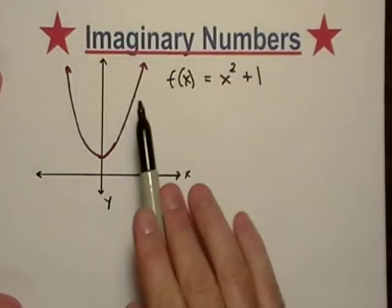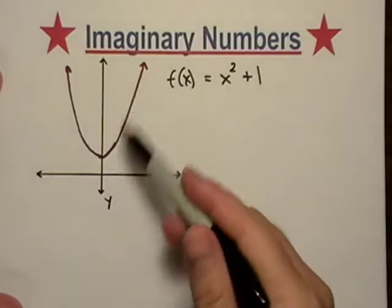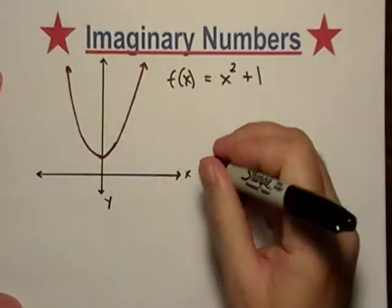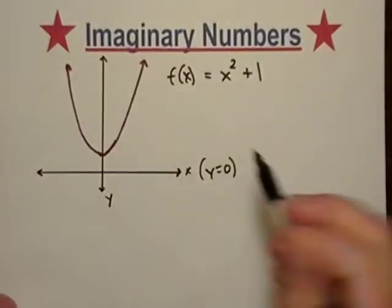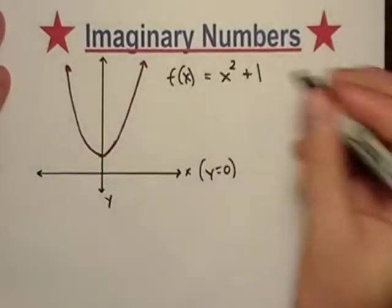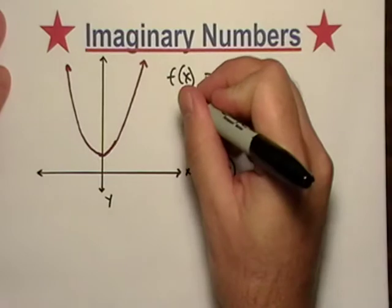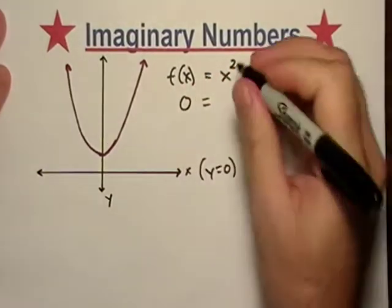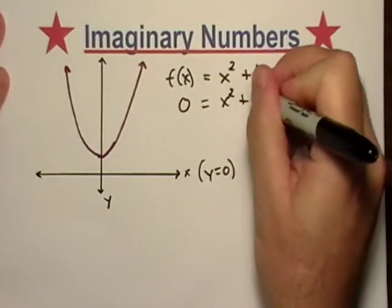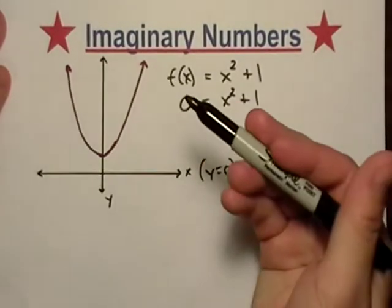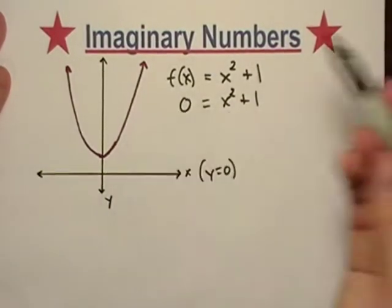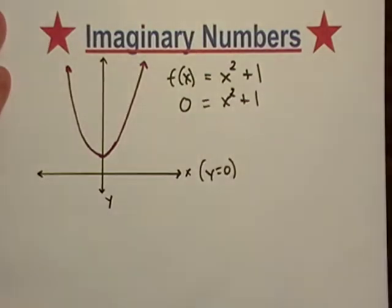You might notice that, first of all, it never crosses the x-axis and this is just y equals zero. So if I were to look for the zeros traditionally, I would set the function equal to zero. It's never equal to zero, never. Let's try to do it anyway and we'll see what happens.